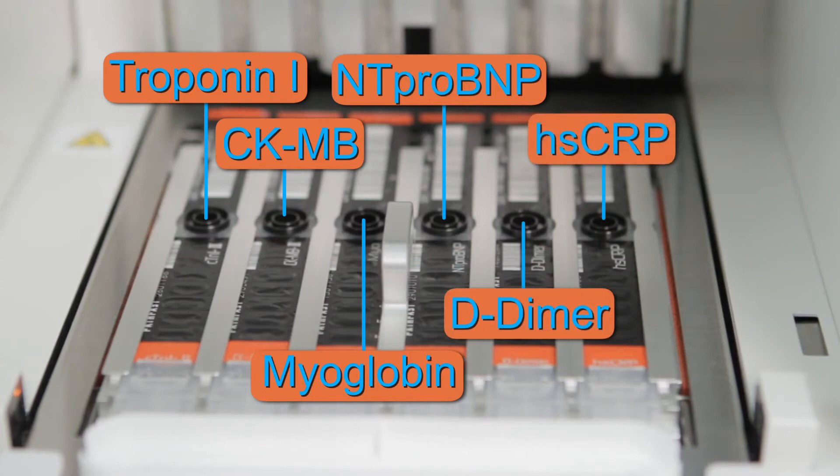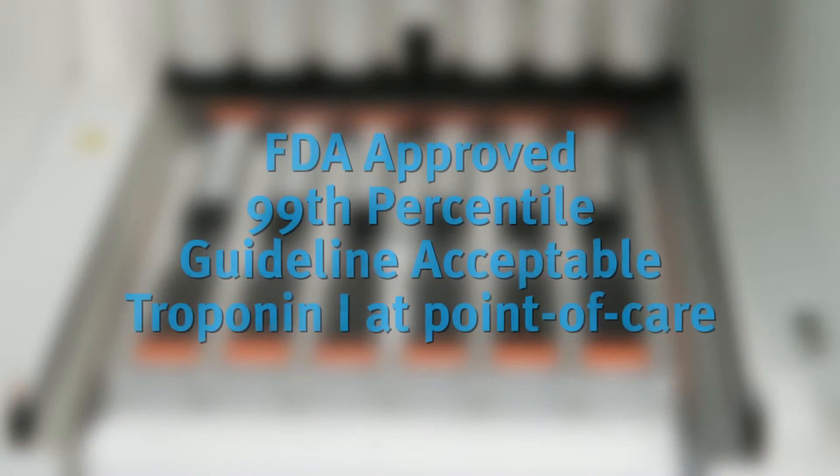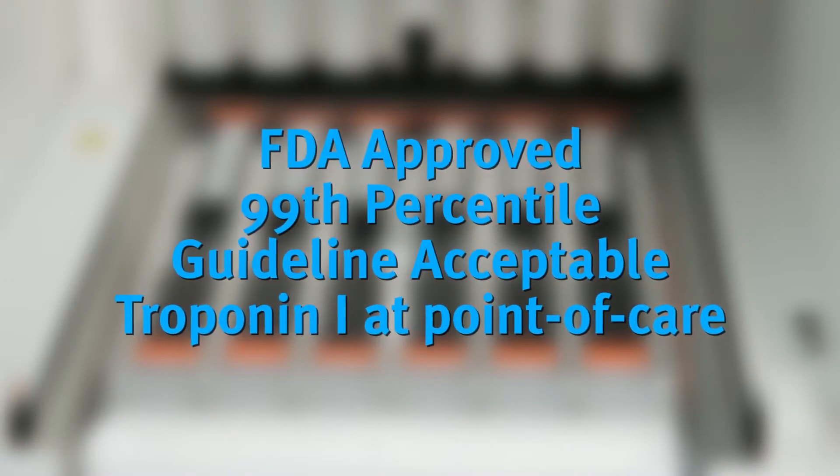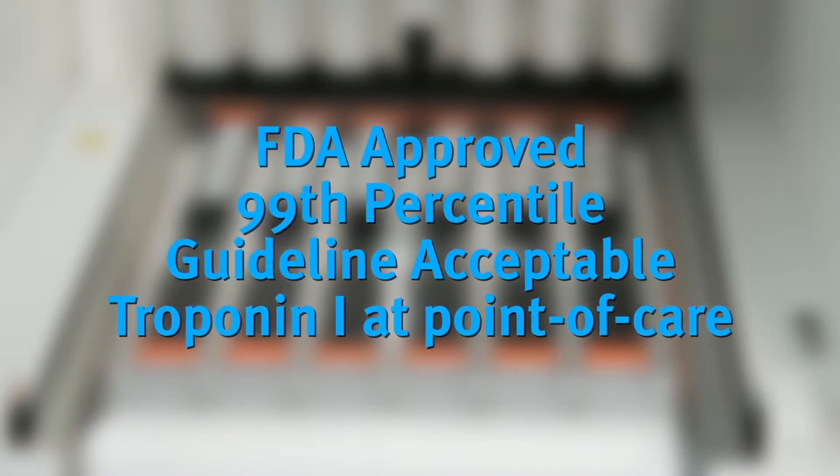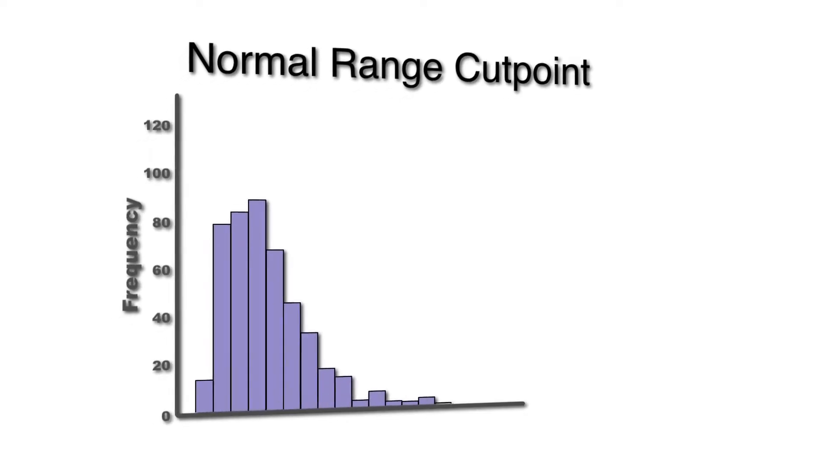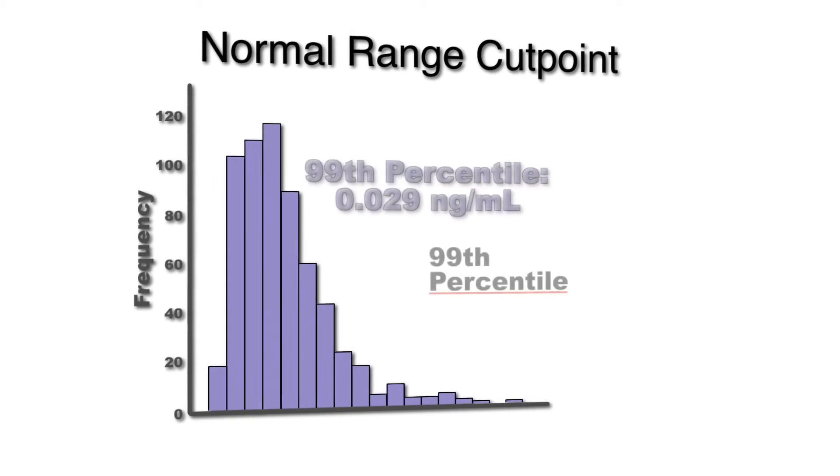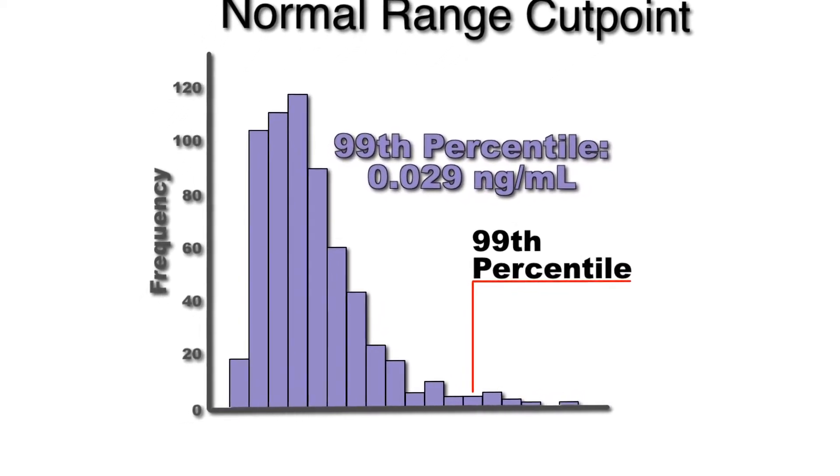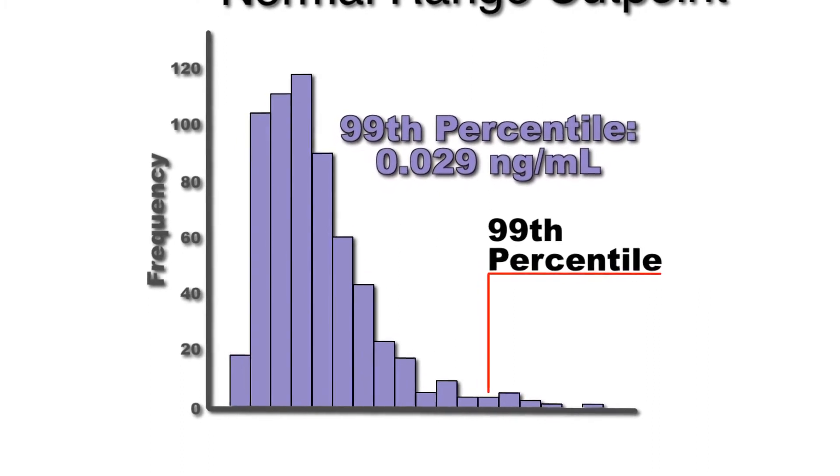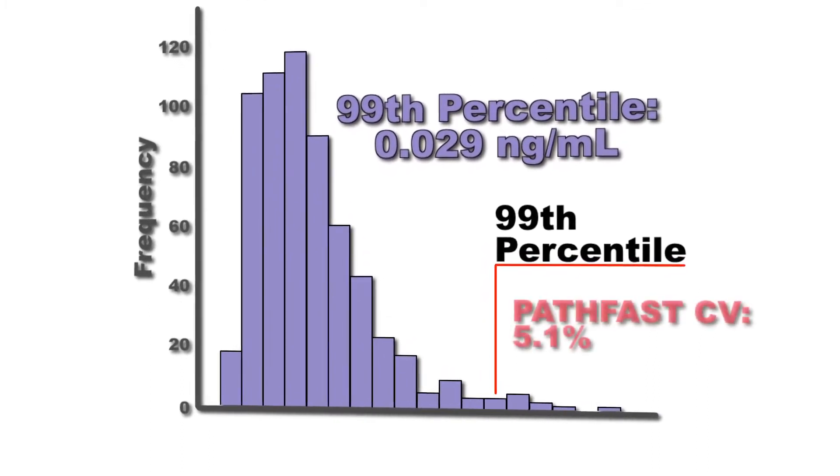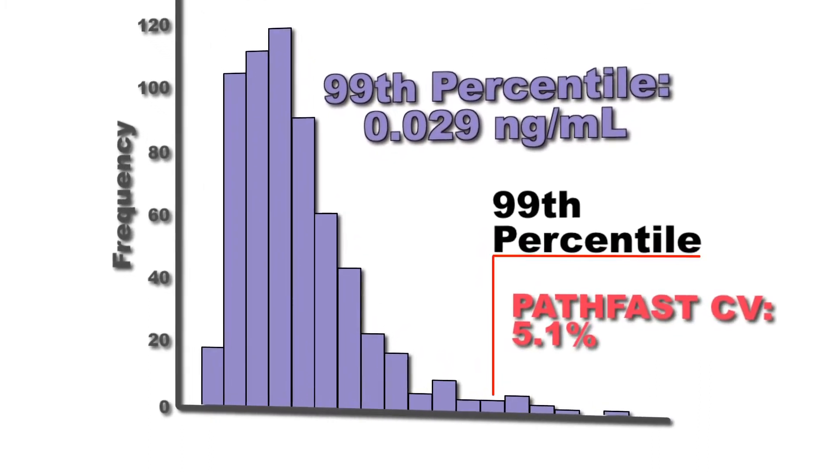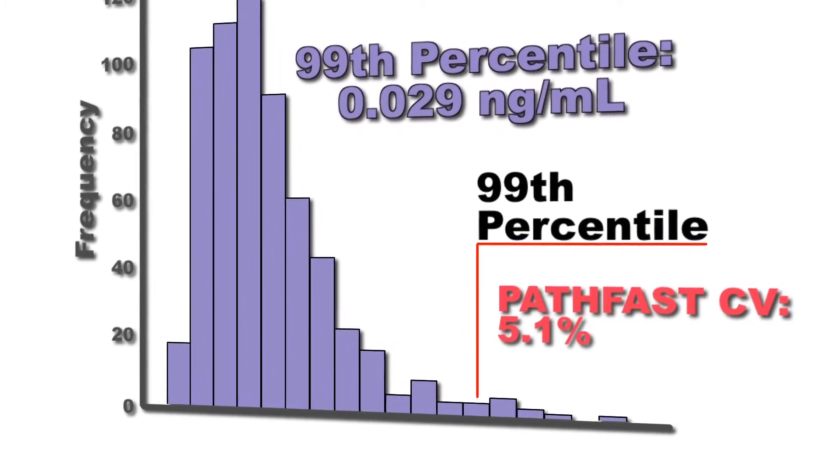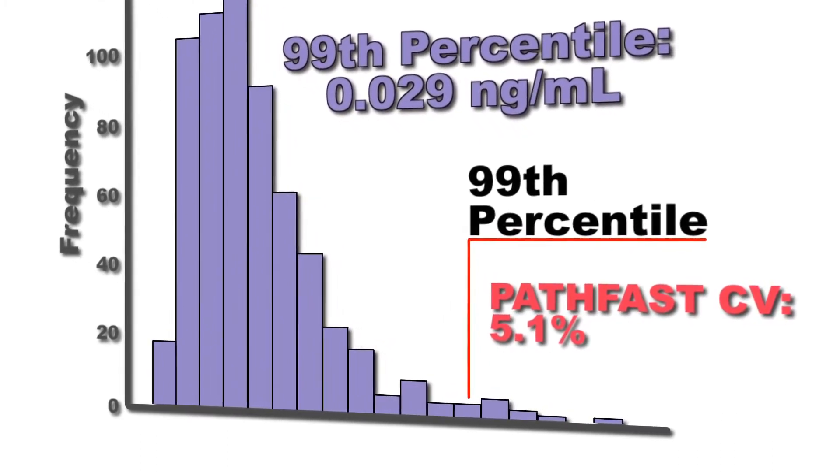The PathFast produces cardiac troponin I results that are guideline acceptable at the 99th percentile in a point-of-care setting. Guidelines define the recommended cutoff values for an elevated cardiac troponin I at the 99th percentile of a normal reference group and have a total imprecision of less than 10 percent CV. The PathFast CVs at this level is 5.1 percent, making it one of the most precise analyzers on the market.